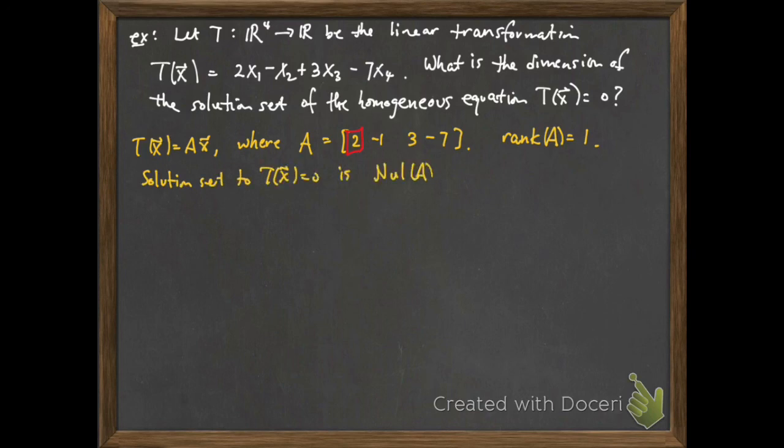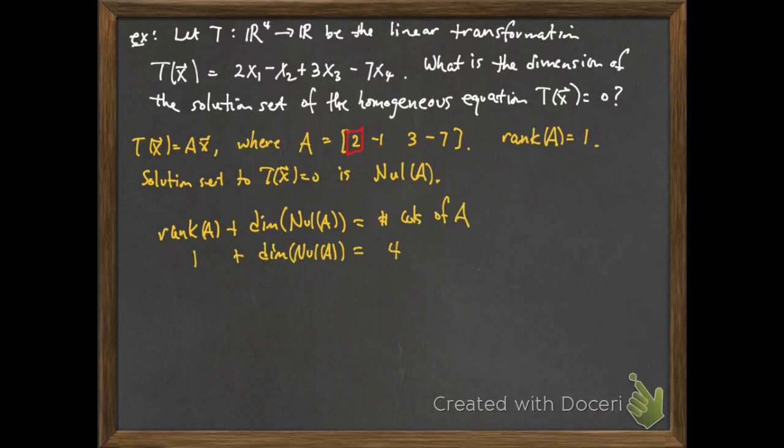So then the solution set to Tx equals 0 is just exactly the null space of this matrix A. And so the rank of A plus the dimension of the null space of A is the number of columns of A by the rank theorem. And so 1 plus the dimension of the null space is equal to 4. And so then I can just solve for the dimension of the null space, 4 minus 1 equals 3.